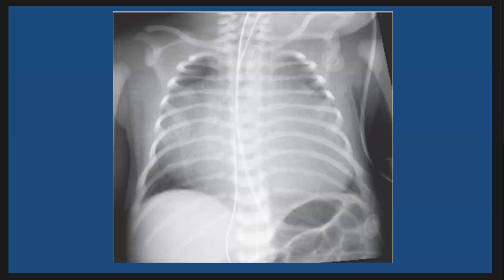So here, this is a case of Ebstein anomaly. As we see, there is massive cardiomegaly with diminished pulmonary vascularity and the heart has a box-like appearance. Ebstein anomaly can be associated with other cardiac problems such as ASD or dysrhythmia.